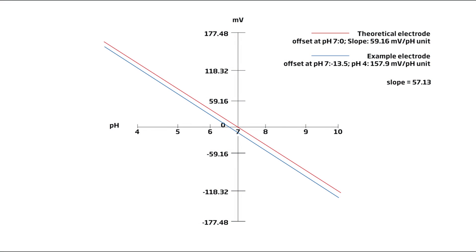The response of a glass sensing pH electrode is based on the Nernst equation and has a theoretical slope of 59.16 millivolt per pH unit change at 25 degrees Celsius.